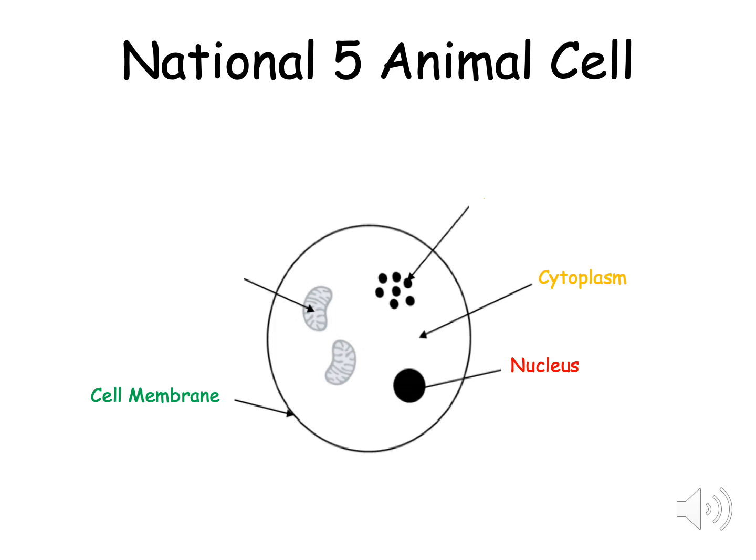There are two new structures and these are called the ribosomes which are usually represented by small dots and mitochondria which look like baguettes or small structures with squiggly lines in them. We're now going to look at all of these structures in a bit more detail.